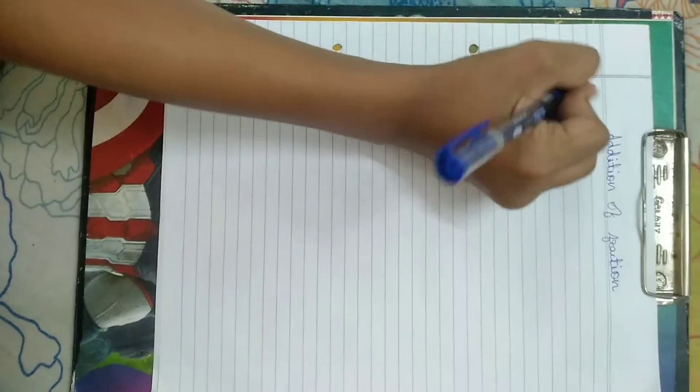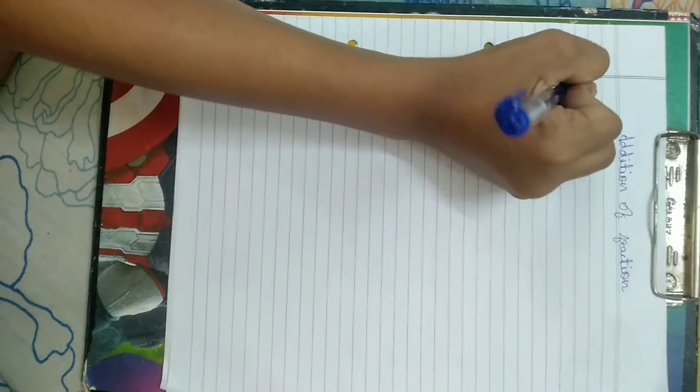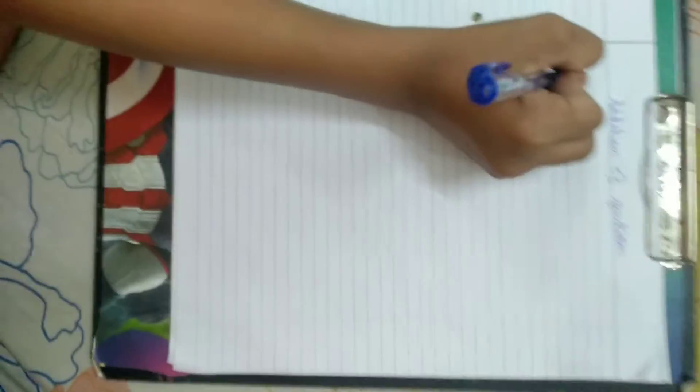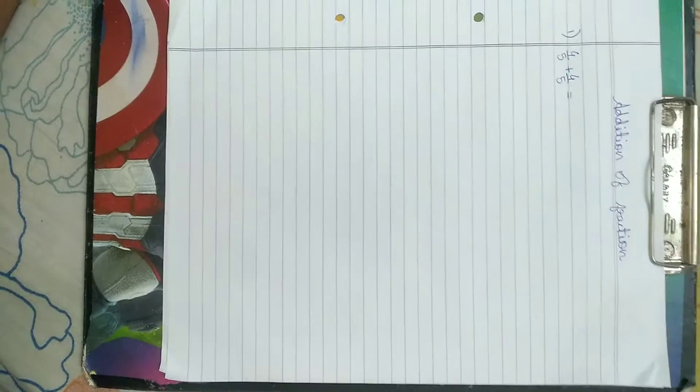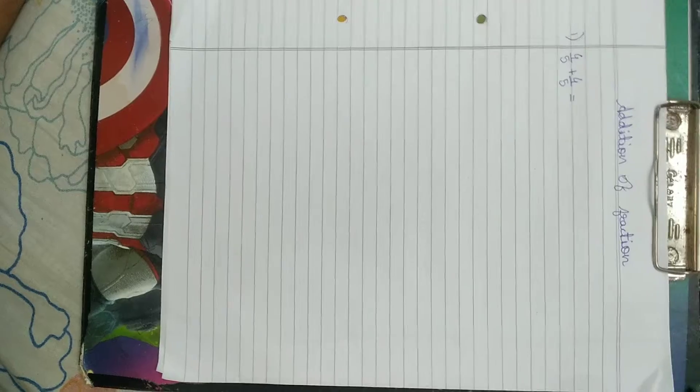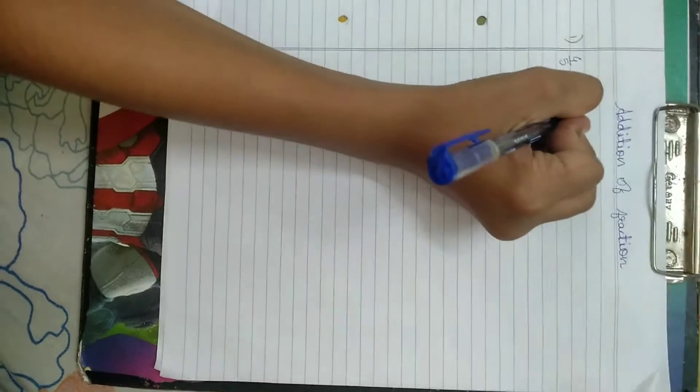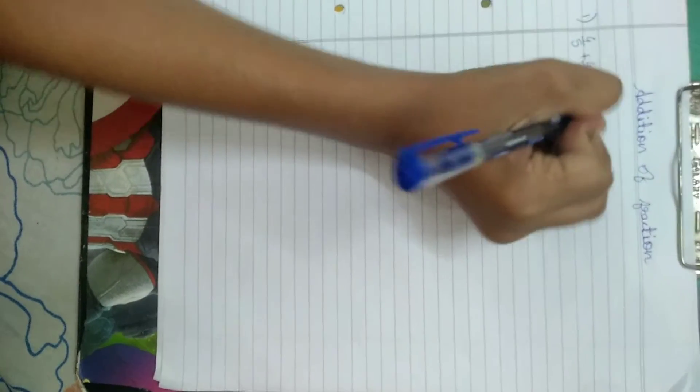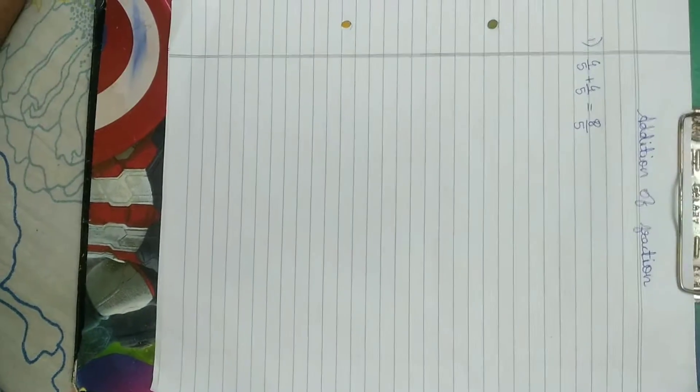First question: 4 by 5 plus 4 by 5. It is easy to add because the denominator is same. So we can simply add the numerator, 8 by 5. So answer will be 8 by 5.